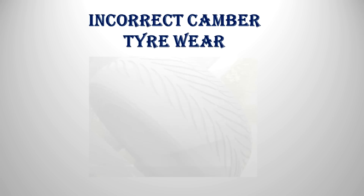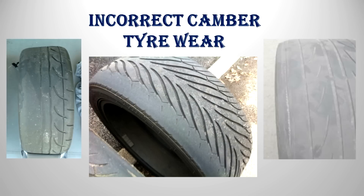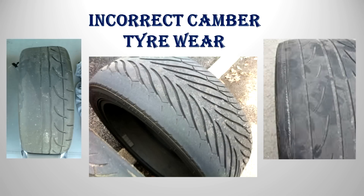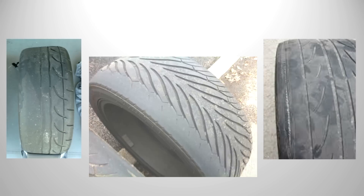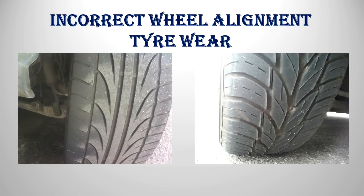Incorrect camber can visually display similar effects on tyre wear as incorrect wheel alignment, but without the feathering associated with incorrect wheel alignment.